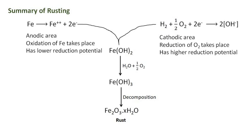The ferrous iron obtained from the anode and hydroxide obtained at the cathode combine to form ferrous hydroxide. In excess of oxygen and water, the ferrous hydroxide is oxidized to ferric hydroxide, which being less stable undergoes decomposition to give hydrated ferric oxides called rust. Therefore, this is the mechanism of rust with the chemical formula Fe2O3.XH2O.